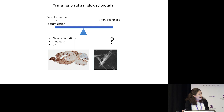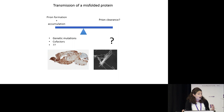This includes genetic mutations in PrP and some cofactors that we're aware of. But when it comes to ways that we can get rid of prions from the body, it's largely not understood if the body can clear prions, and if it can, how this takes place.